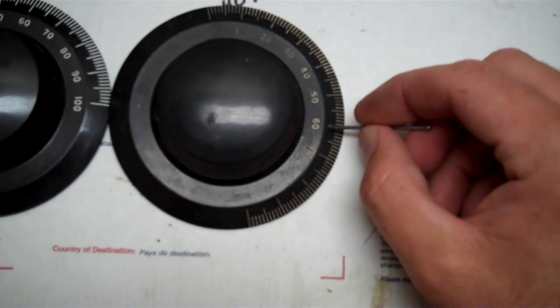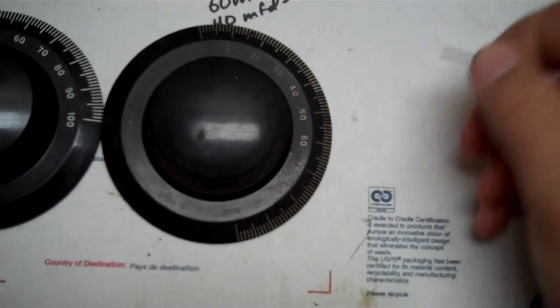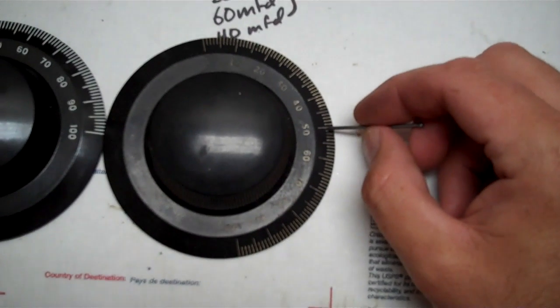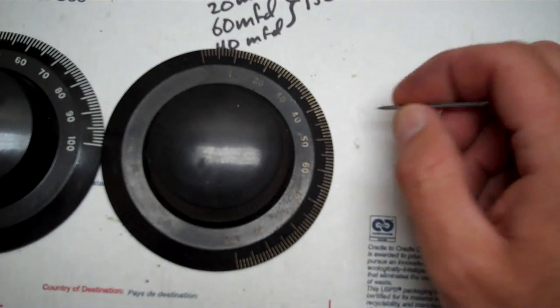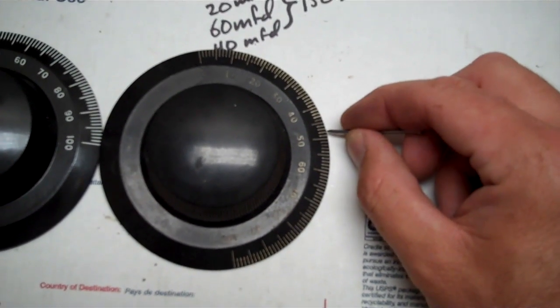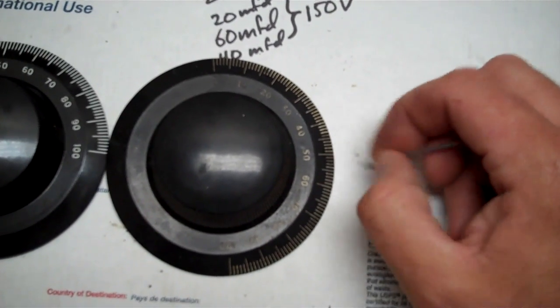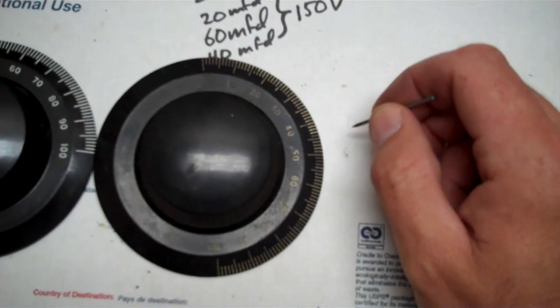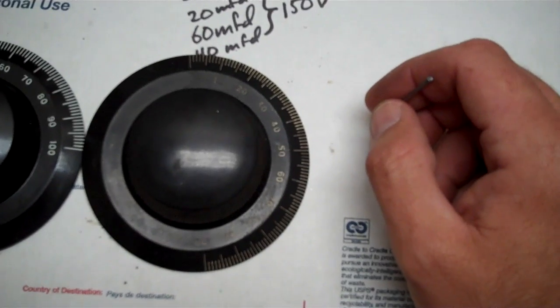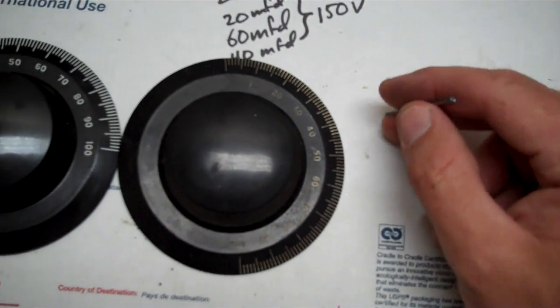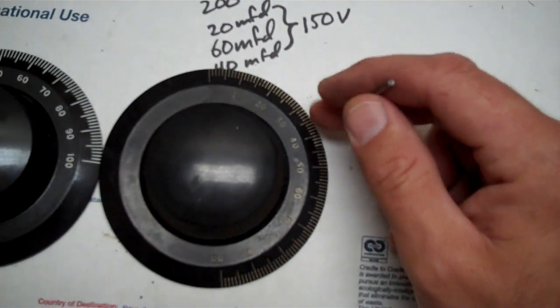You'll notice on these dials, they have recesses. All these lines are recessed and then filled in with paint. And over God knows how many years, that paint turns dark from grime and it just doesn't clean up. So what you're going to do is take this, you're going to scrape out each and every single line very carefully because you don't want to be adding any extra scratches. I'm going to go ahead and get started on this, and then I'll show you what it looks like without the paint.